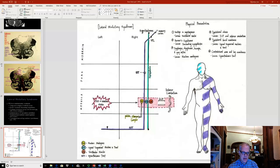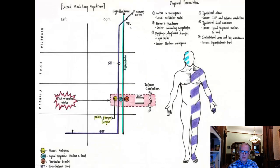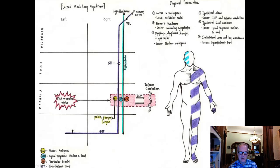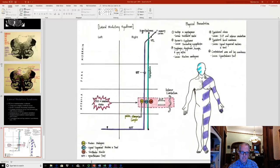Spend some time on that — try to draw this out as much as possible. The more things you can draw, the better it sticks. We'll contrast these different brainstem syndromes as we go up through the levels.